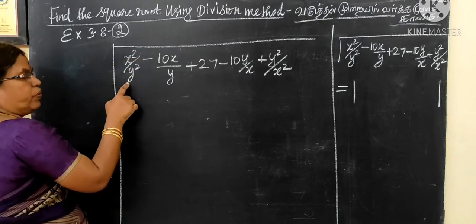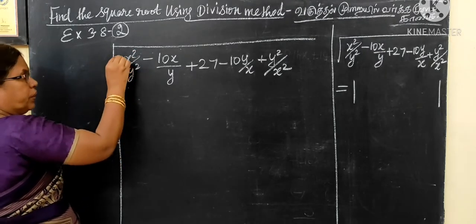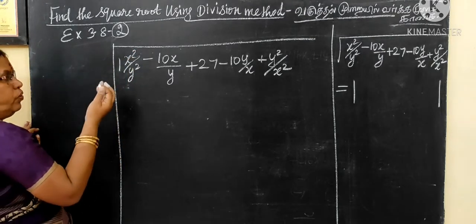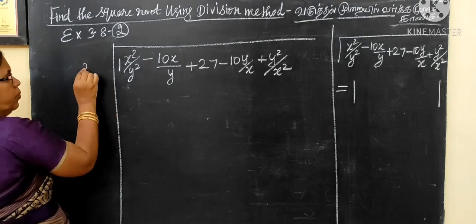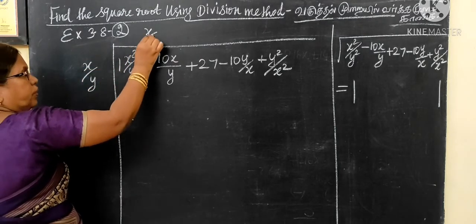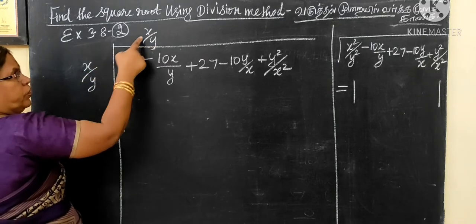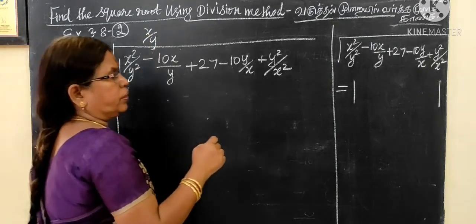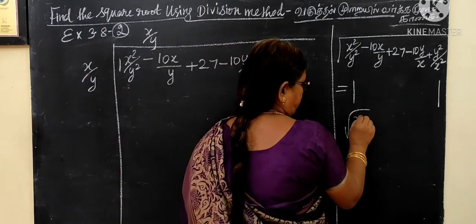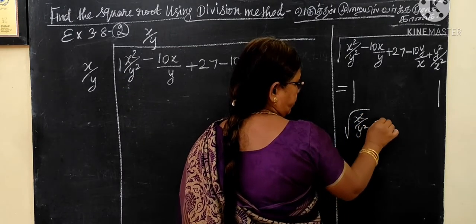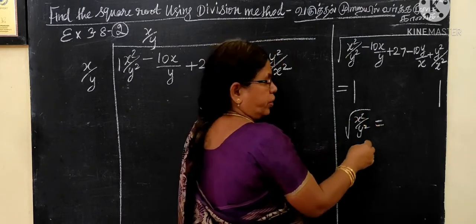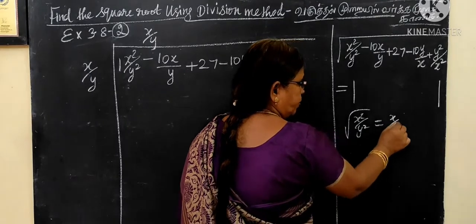X squared by Y squared. What do I want to do? This is x by y. X into x is x squared. Root of x squared by y squared. What is the root of x squared? x by y.